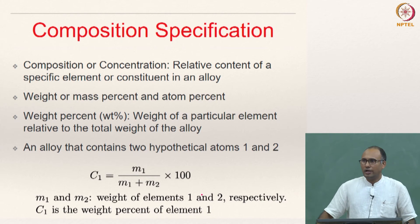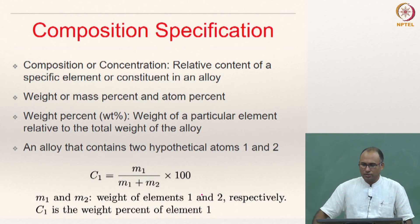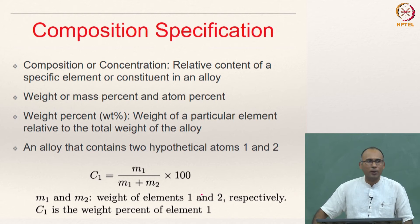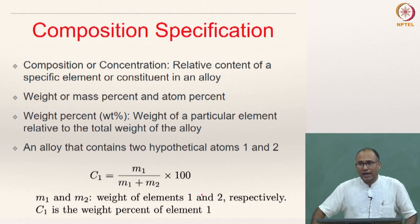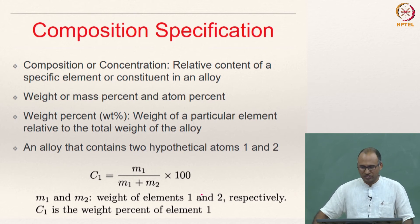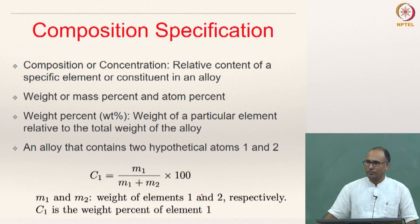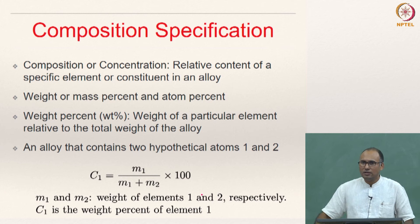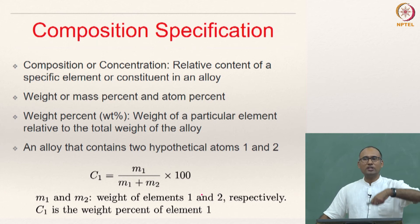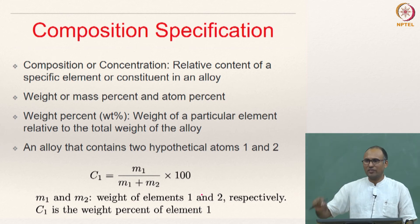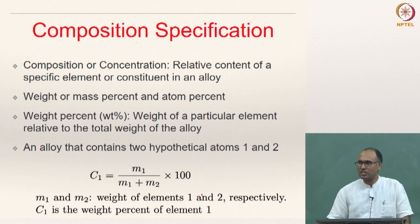Now, how do we specify the composition or concentration of a solid solution? The relative content of a specific element in an alloy is called the composition. You can describe this composition as weight percentage or atom percentage. Weight percentage is the weight of a particular element relative to the total weight of the alloy. Atom percentage is the fraction of the number of atoms of a particular element relative to the total number of atoms.